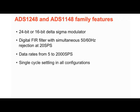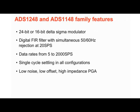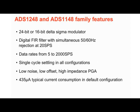The ADC is capable of converting at data rates from 5 samples per second to 2,000 samples per second while maintaining single cycle settling, which is essential for multiplexed applications. All devices in the family include a low noise, low offset, and high input impedance PGA that optimizes the input range of the sensor being used. Low base current of 435 microamps makes these devices perfect for power sensitive applications, and all devices provide configurable gain and offset calibration.